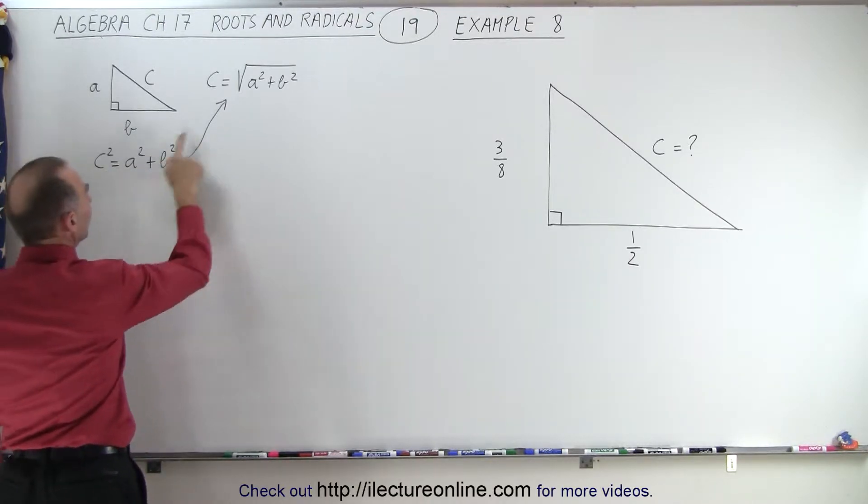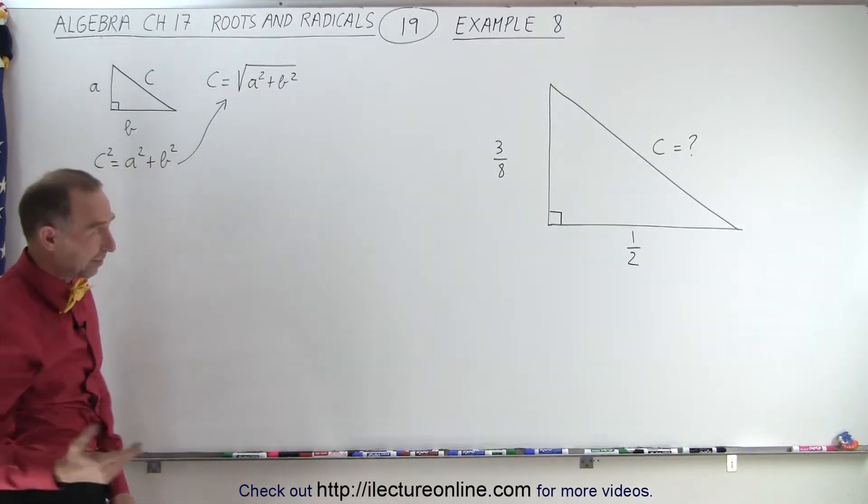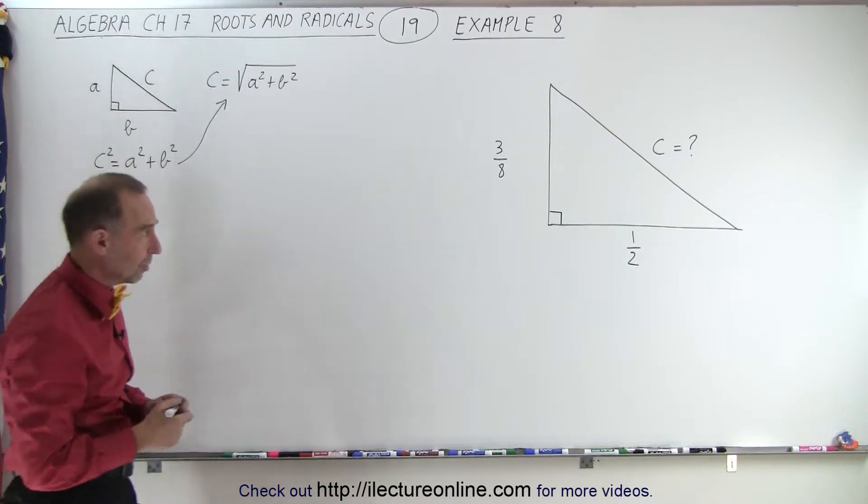So if we solve for the hypotenuse, we say that c is equal to the square root of a squared plus b squared. So using that same principle, we're going to try to solve this.